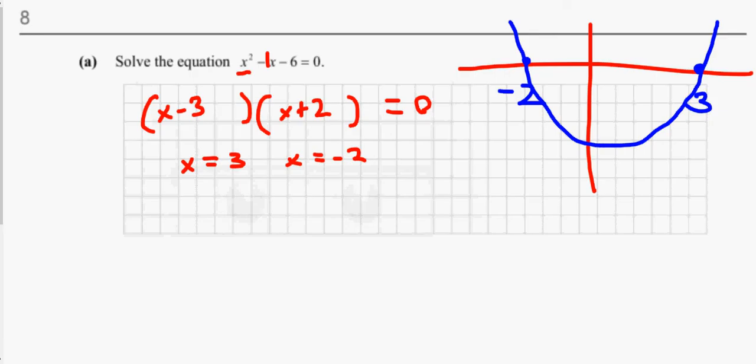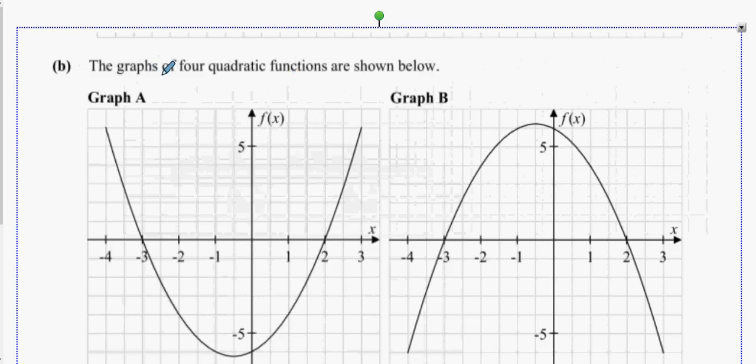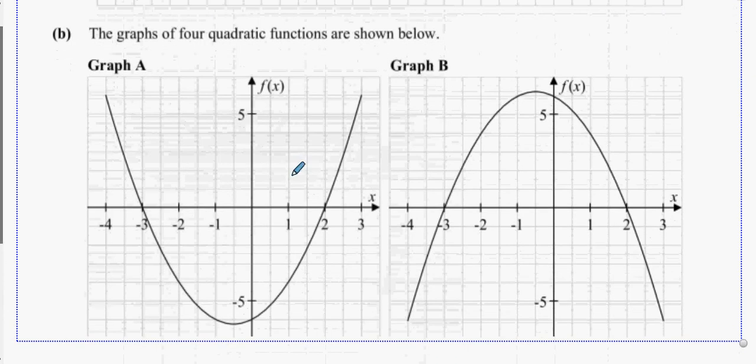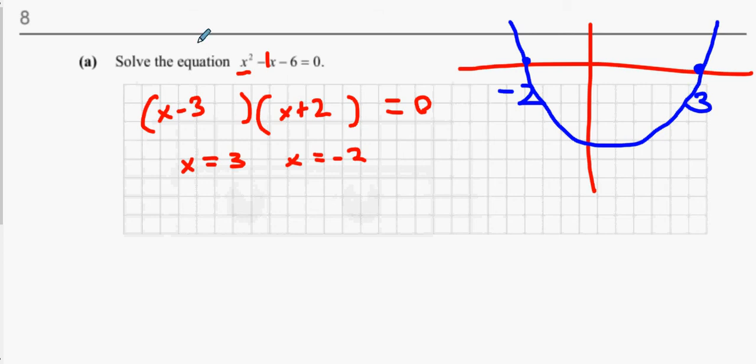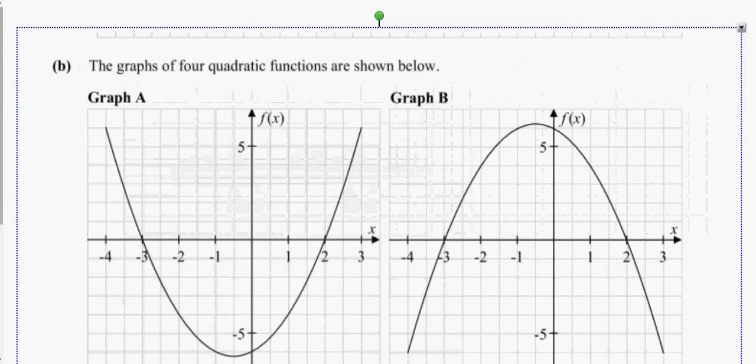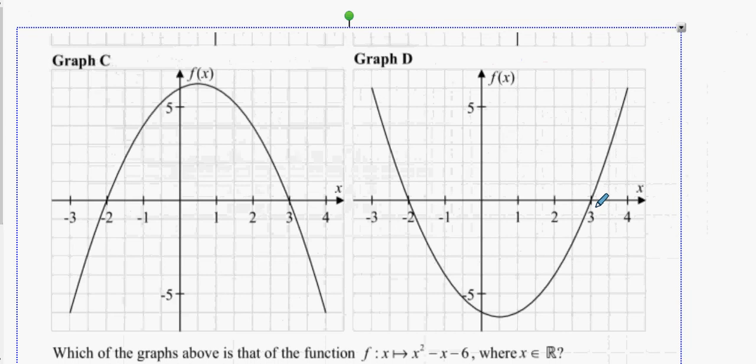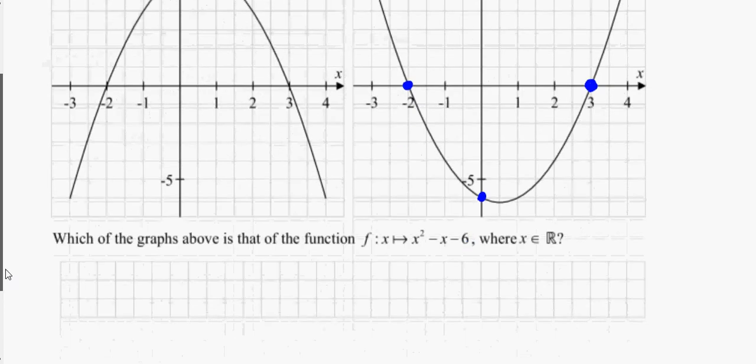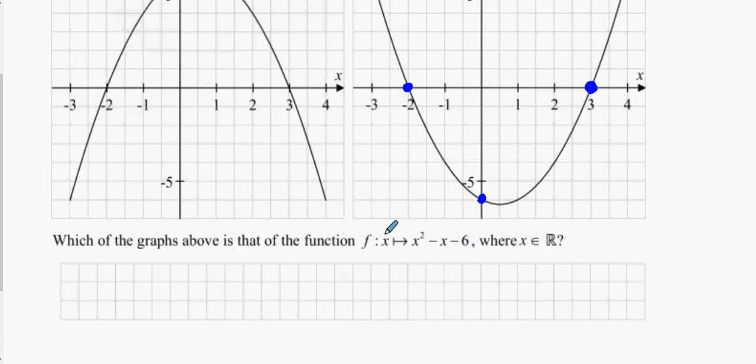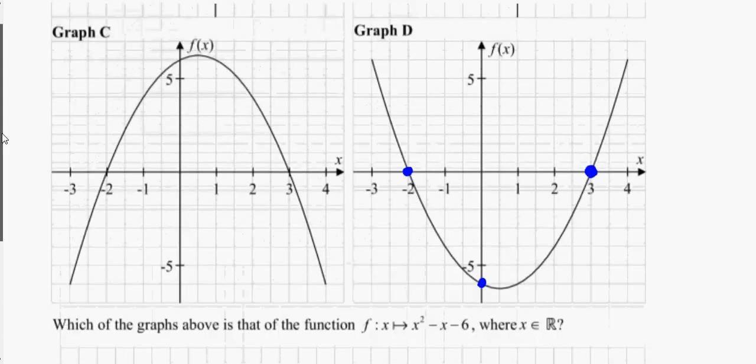Next question. The graph of the four quadratic functions are shown below, and so that's graph A and graph B. We're looking for one that crosses at minus two and crosses at three, but not those two. This one here, would everybody be happy with that one there? You go, which one of the above is this one here? And you say graph D.